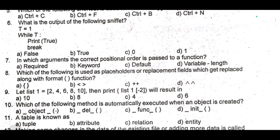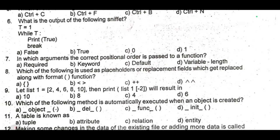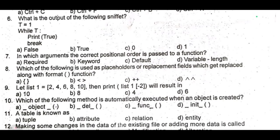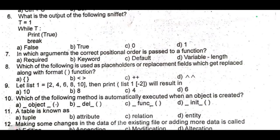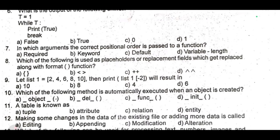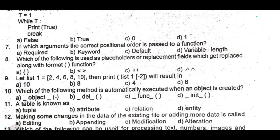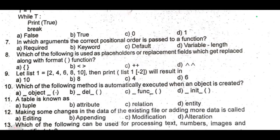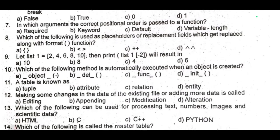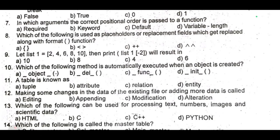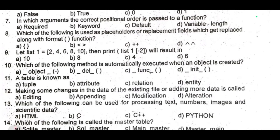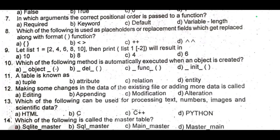Ninth: the list one equals to [2, 4, 6, 8, 10] — then print list one minus two will result in blank. Tenth: which of the following method is automatically executed when an object is created? Eleventh: a table is known as blank.